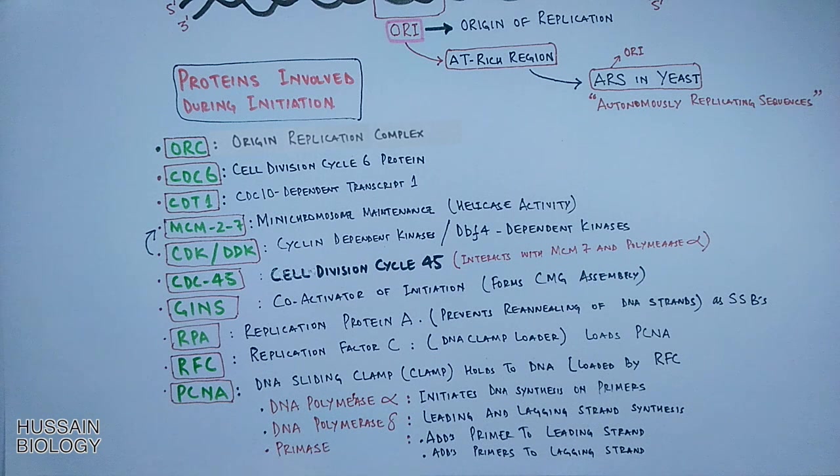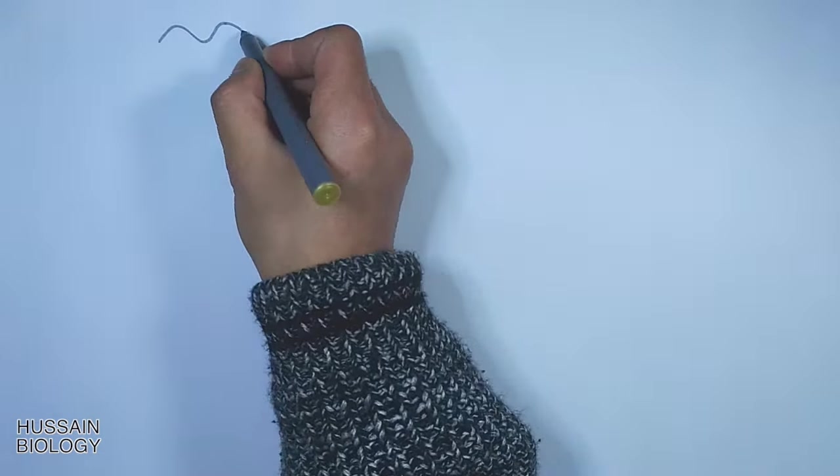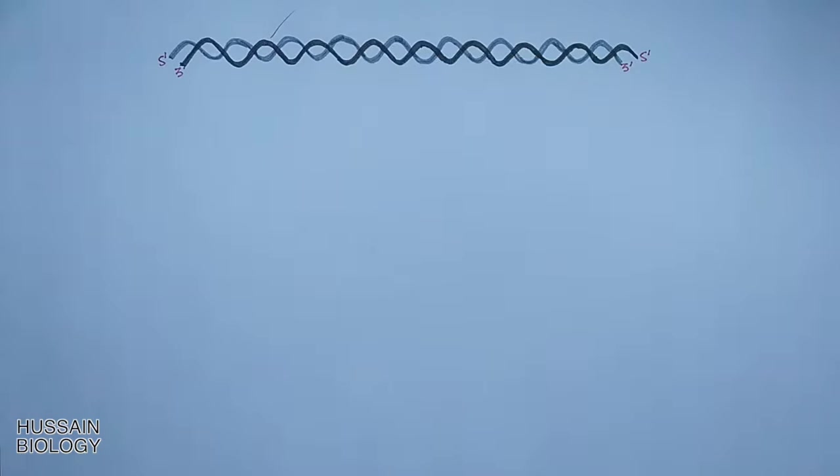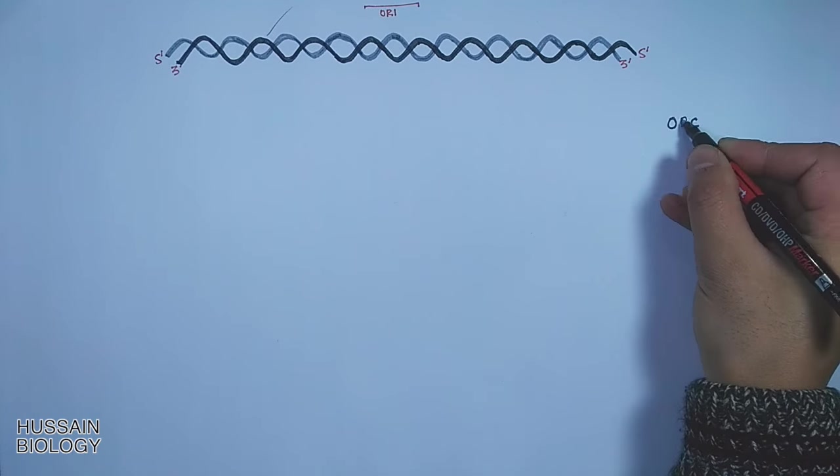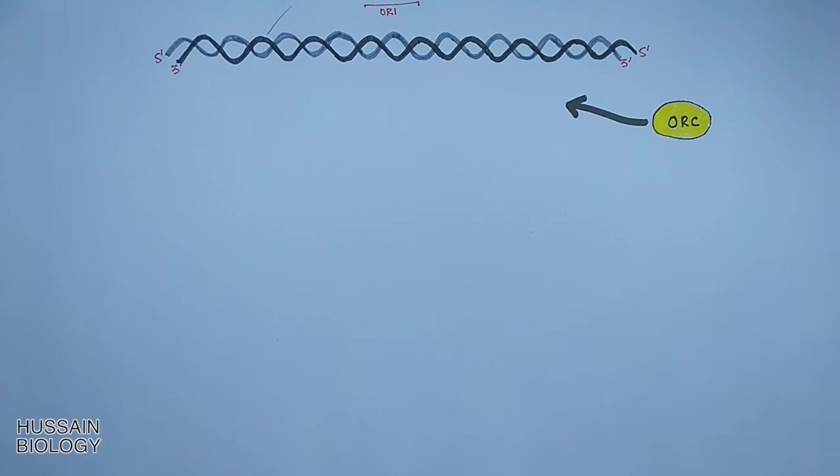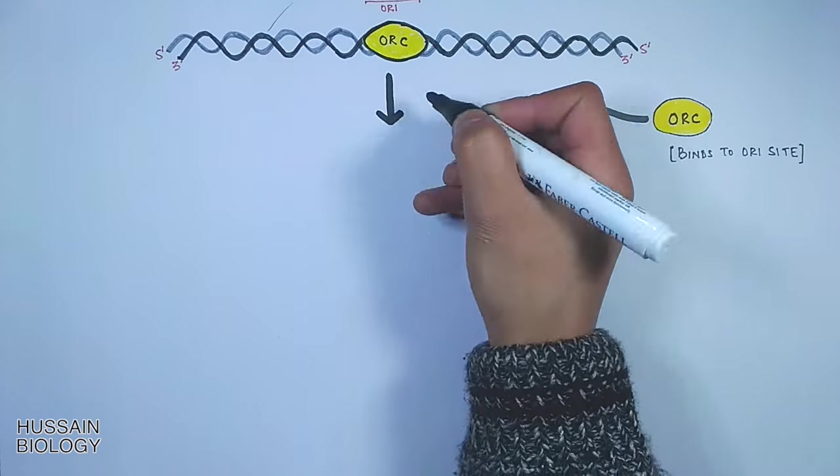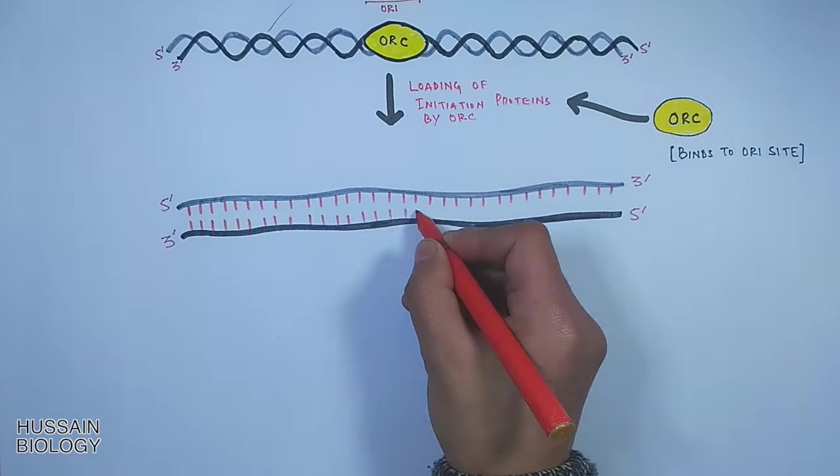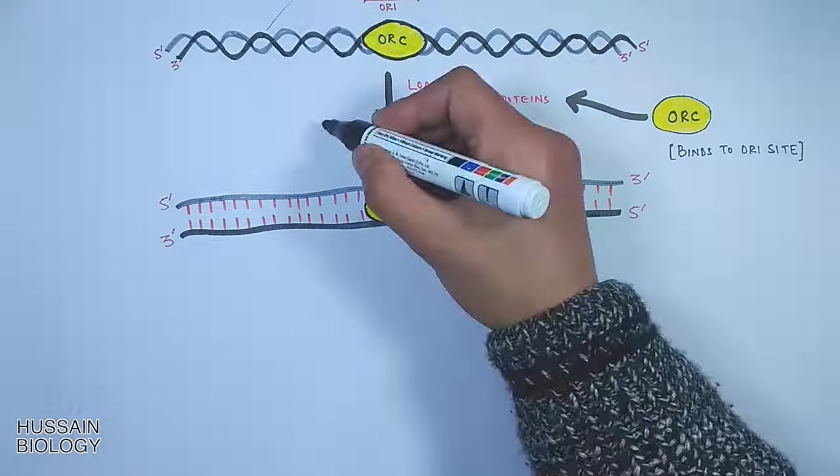Now let's see the initiation process in eukaryotes in detail. Here in this diagram you can see the DNA molecule with ORI site. The first protein it attaches is the ORC protein. The ORC binds to the ORI site. Then with the ATPase activity of ORC, it loads all other initiation proteins.